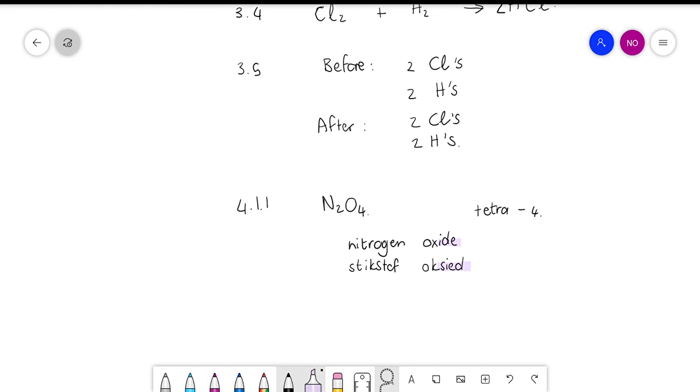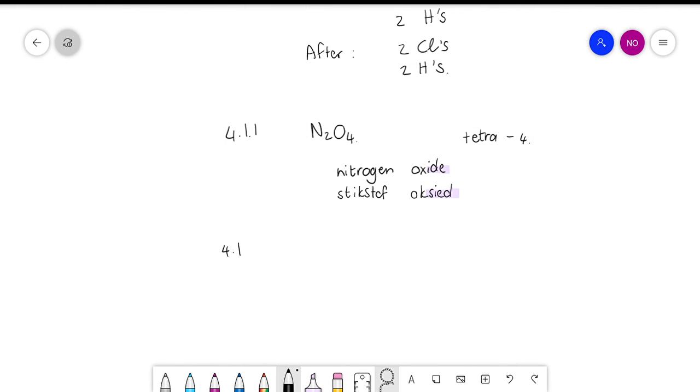And then the next one is a bit more difficult and we often forget about this. Remember, iron is one of the transition metals. And if you have a transition metal, you must put the charge in brackets in the name.